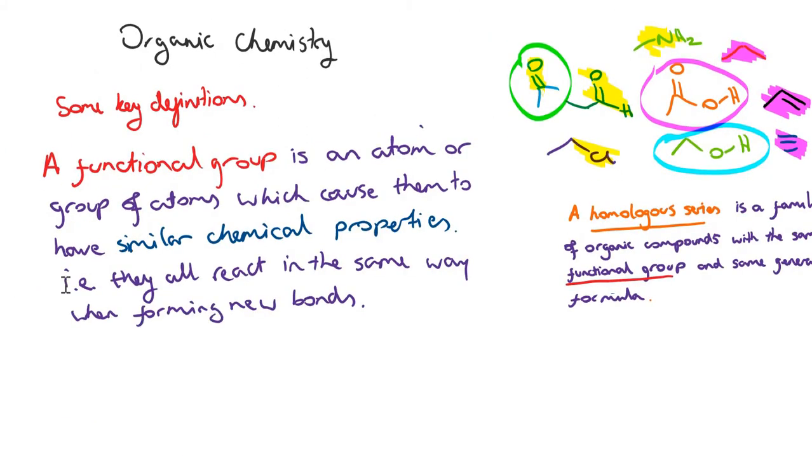So now I'm introducing the functional group definition. We know that it's an atom or group of atoms, like I've talked about over here, that cause molecules to have similar chemical properties. That's because they react in the same way when forming new bonds. So each homologous series will have a different functional group.